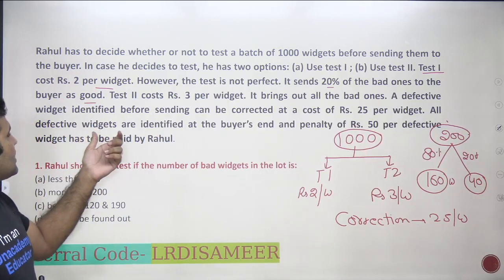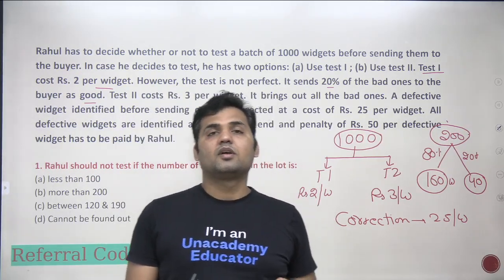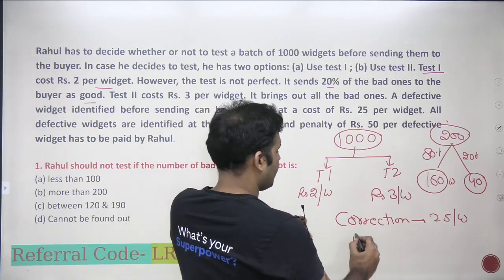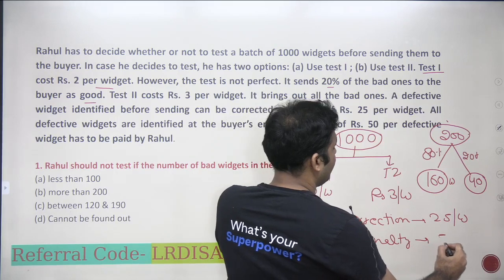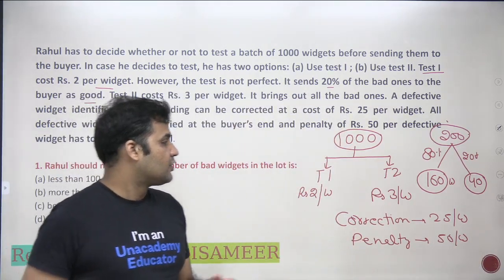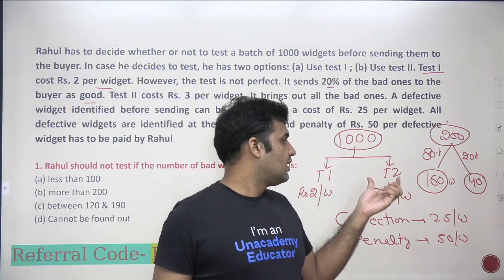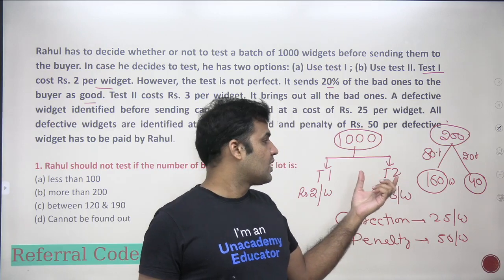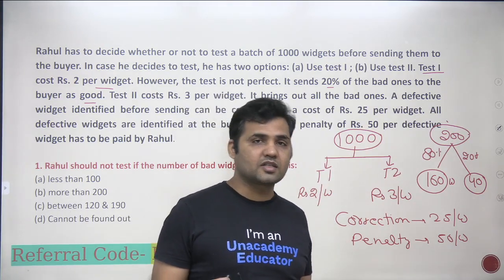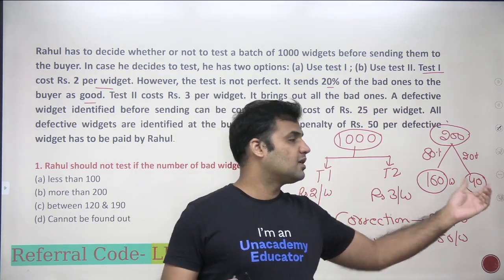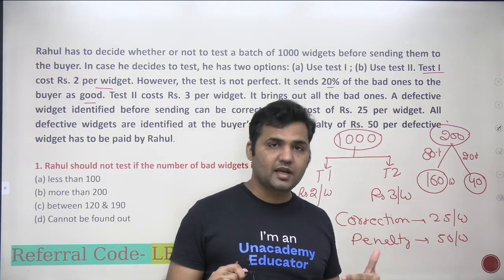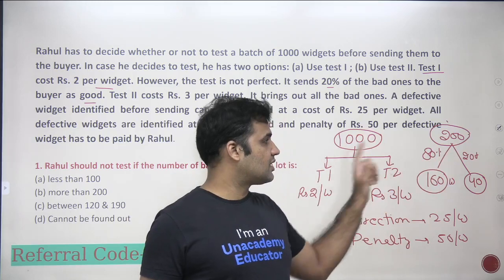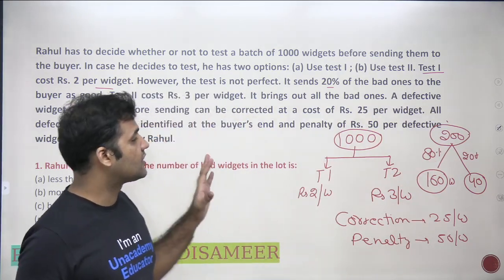All bad widgets identified at the buyer's end will incur a penalty of 50 rupees per widget. So if you sell a defective item to the buyer, you pay a 50 rupee penalty. Test 2 is 100% perfect — it does not pass on any defective items to buyers, so there's no penalty in the case of Test 2. Penalty only applies in the case of Test 1 or no testing.